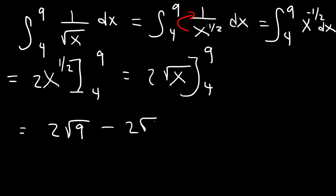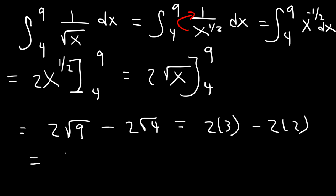F of b is 2 times the square root of 9, minus F of a which is 2 times the square root of 4. The square root of 9 is 3 and the square root of 4 is 2. Two times 3 is 6, two times 2 is 4. Six minus four is 2, and that's the final answer.